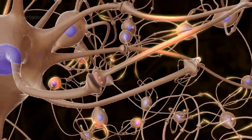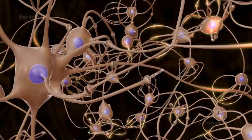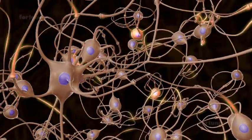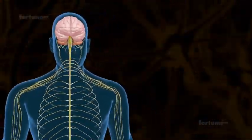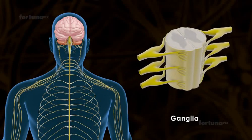Together, axons and dendrites form bundles of nerve fibers commonly referred to as nerves. Clusters of nerves are known as ganglia.